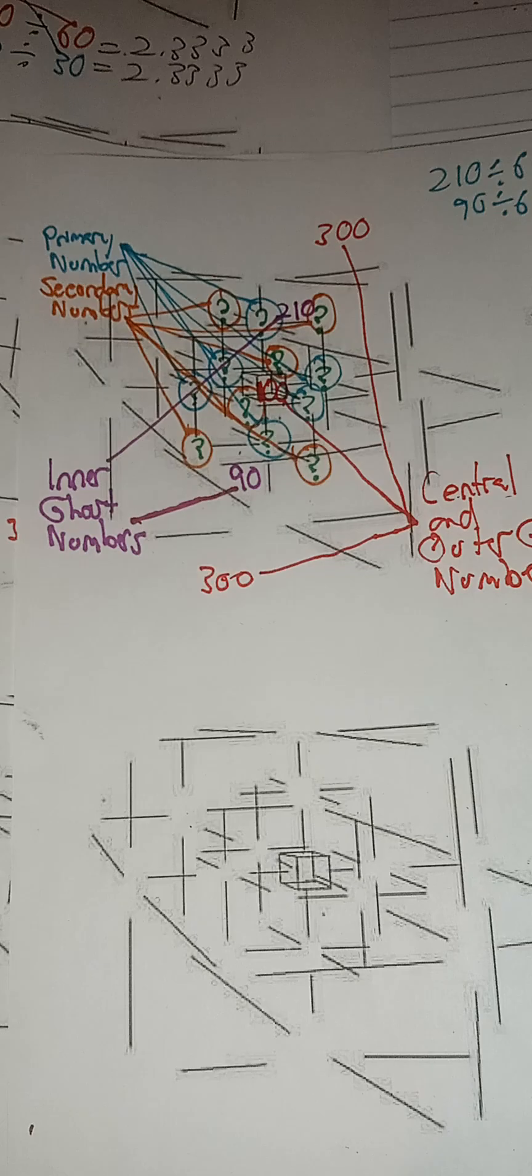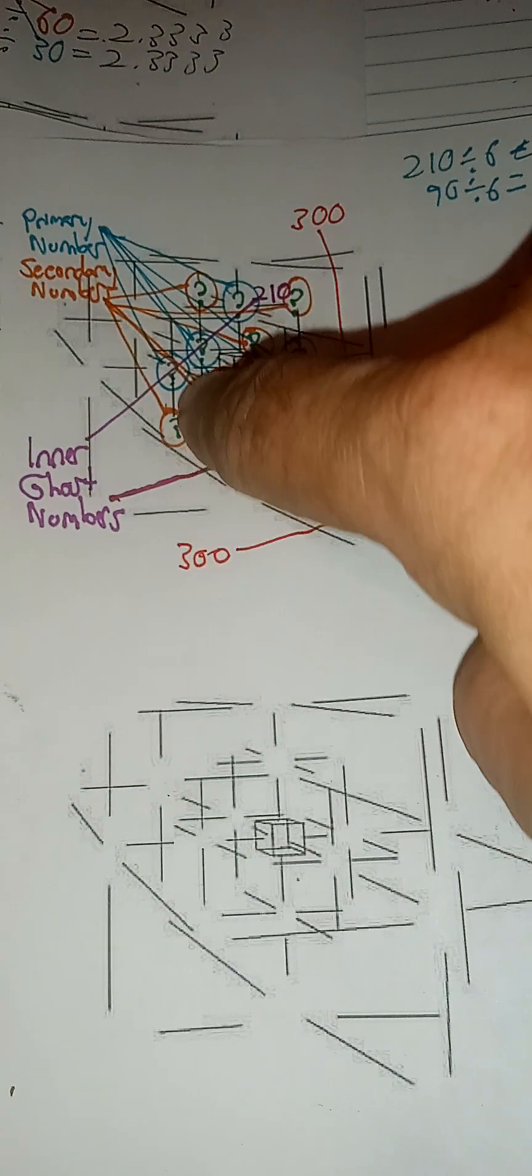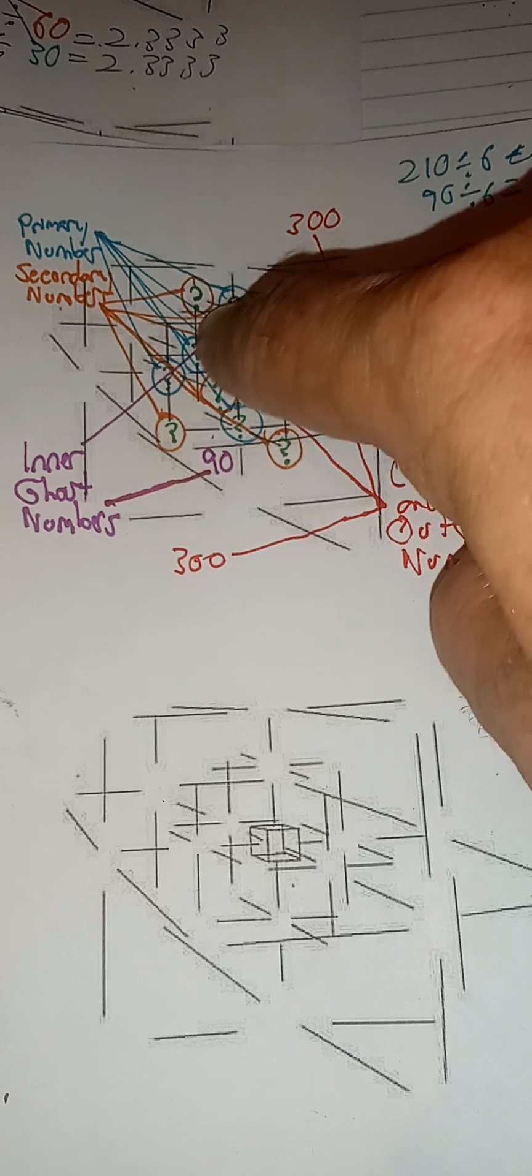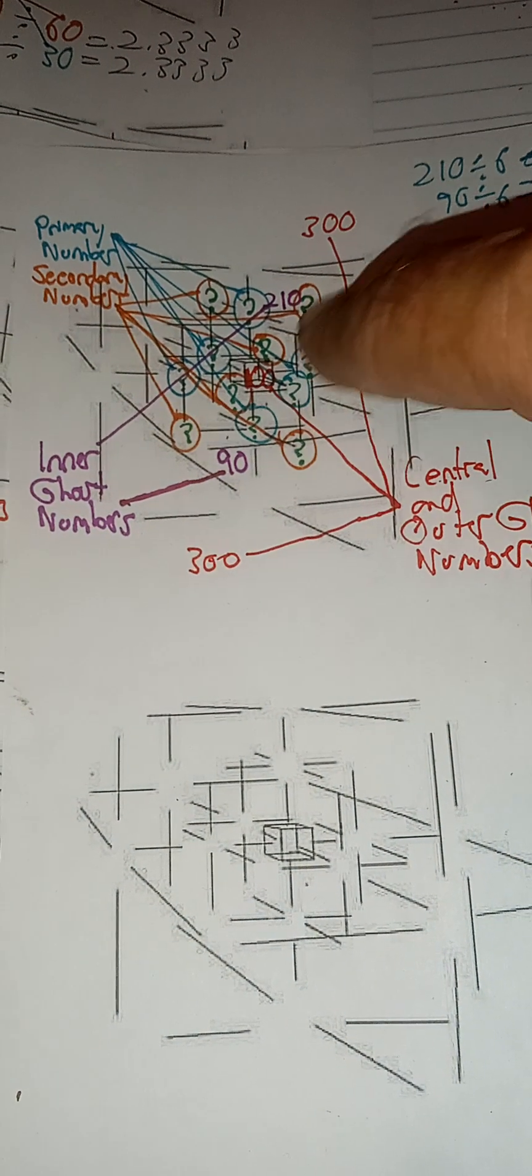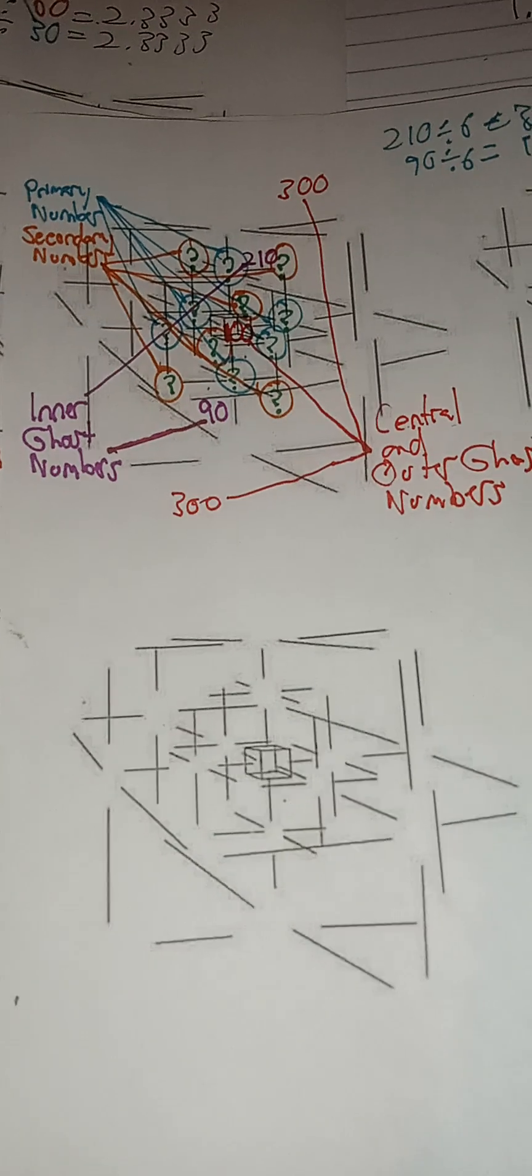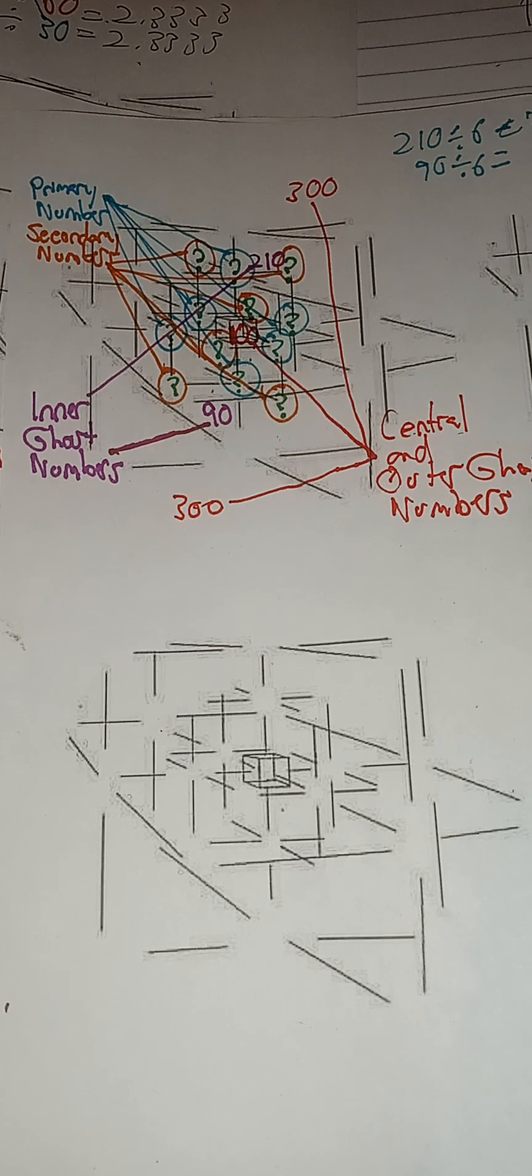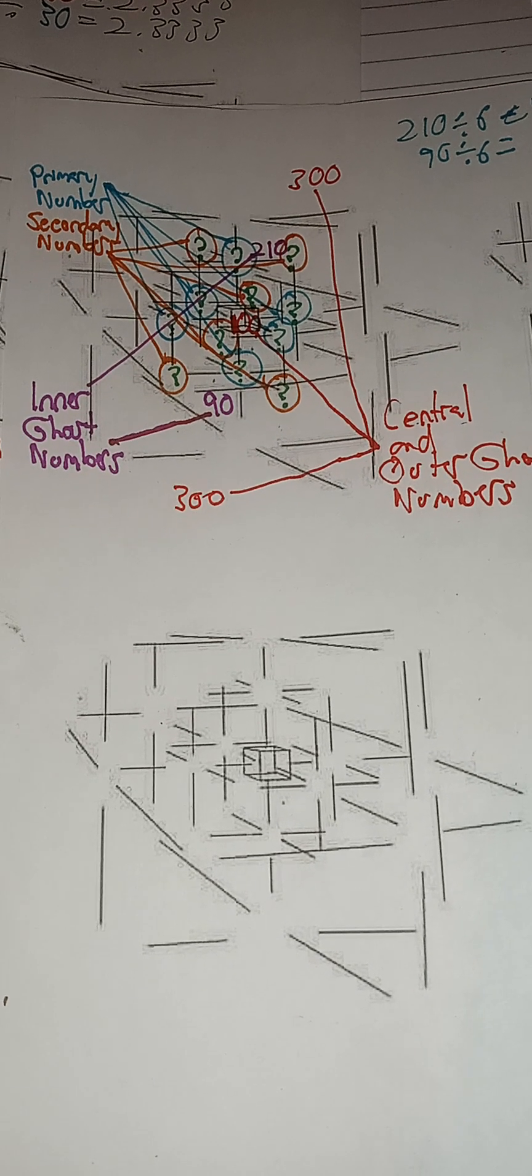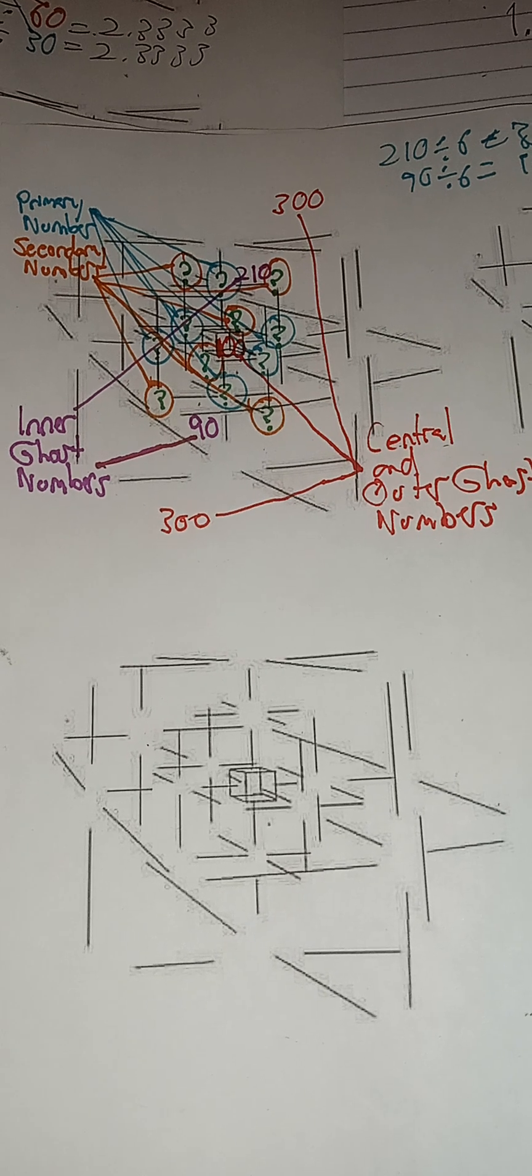So, my conjecture is that you can determine the whole rest of a magic ghost number cube by knowing the inner ghost numbers, inner ghost numbers, and the central and outer ghost numbers. And I know it takes a system of equations to figure this out, but there's just some proportions to look at.